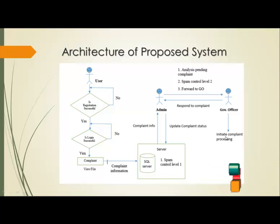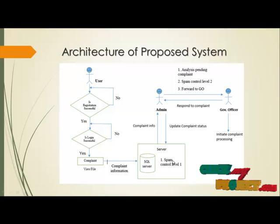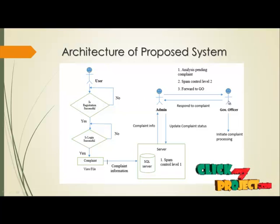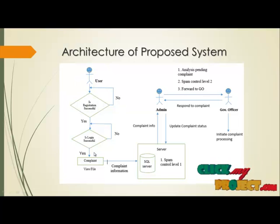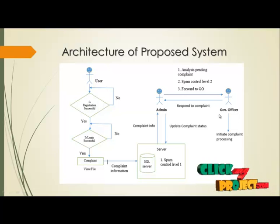The government analyzes the complaint and posts it to the responsible officer. The complaint is processed and a response status is generated immediately. The server updates the complete status and posts it back to the client easily. This two-way communication ensures the public complaint and the government officer response are connected, with status updated immediately.